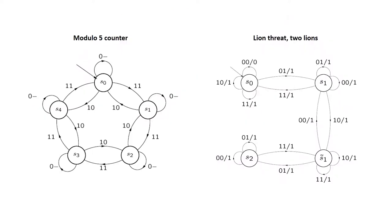We can see this from the state transition graphs from the two different problems. If we look at the modulo 5 counter, we see that if we have an external clock signal and we are in state S0 with input 11, then when we get the clock signal, we will move to state S1.